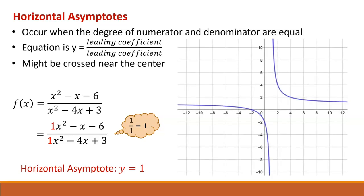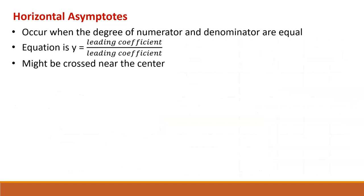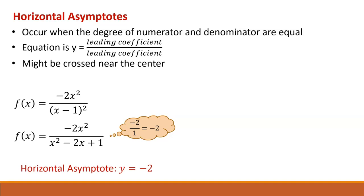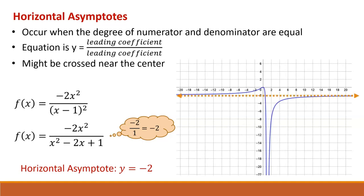Now let's look back at the very first function we started with and find its horizontal asymptote. We'll need to square the x minus 1 in the denominator to find the leading coefficient there. The leading coefficient in the numerator is negative 2, and in the denominator it's 1, coming from 1 times x squared. So negative 2 divided by 1 is negative 2, giving us a horizontal asymptote of y equals negative 2. Here's the graph of our function with the line y equals negative 2 shown as the horizontal asymptote.